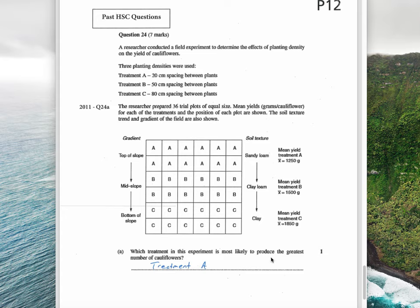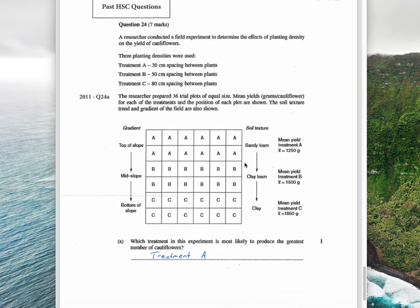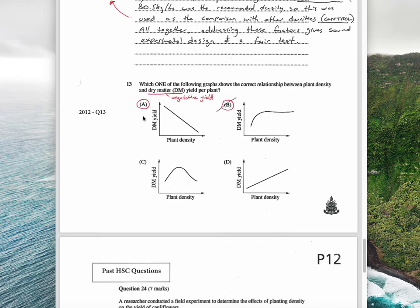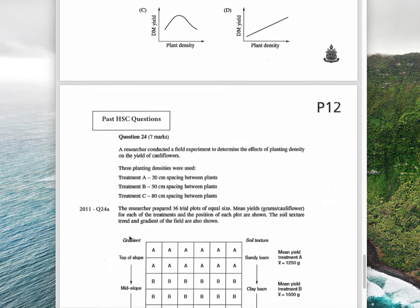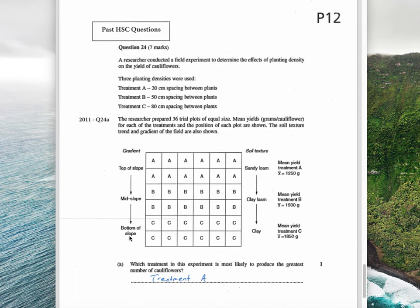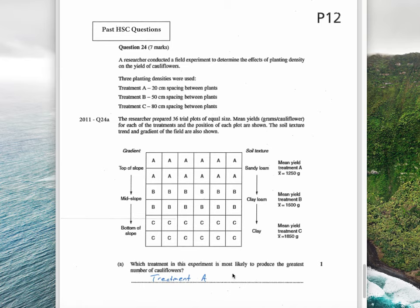The answer here is the greatest number of cauliflowers is going to be with treatment A, which are 20 centimeters apart, because there's far more of them in the same area. Again, similar to the previous question, it is a challenging question and one that you need to be careful about reading carefully. It says here to produce the greatest number, not the greatest yield. If it said yield, the answer would be C. But because it says the greatest number, the answer is A.